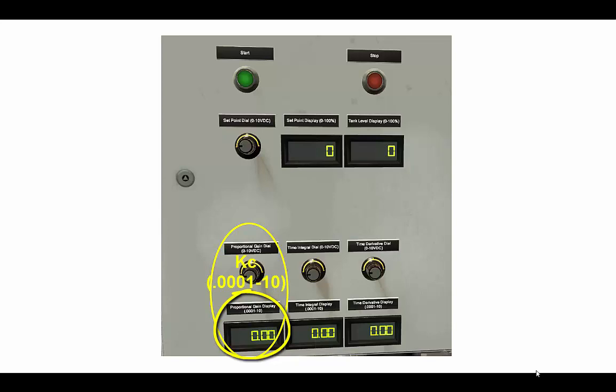And you'll notice that the proportional gain should never go to 0. It will give an error in the PID instruction. So we've set this to go between 0.0001 and 10, rather than from 0 to 10.